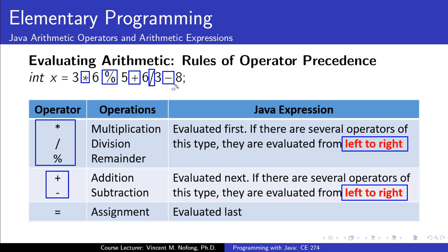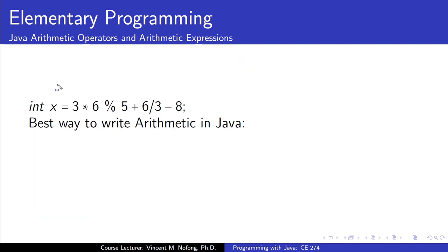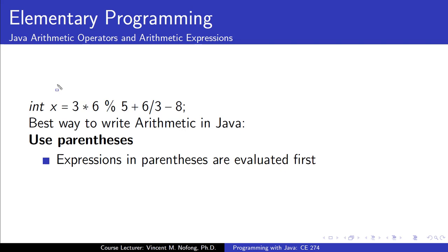Once all these operators have been evaluated, the assignment operator is what will be evaluated last, assigning the final value to x. So if we want our expressions to be evaluated in a specific order, we need to write them properly using parentheses. Expressions inside brackets will be evaluated first, before the rule of operator precedence applies.